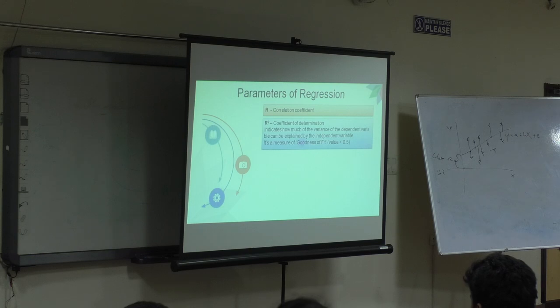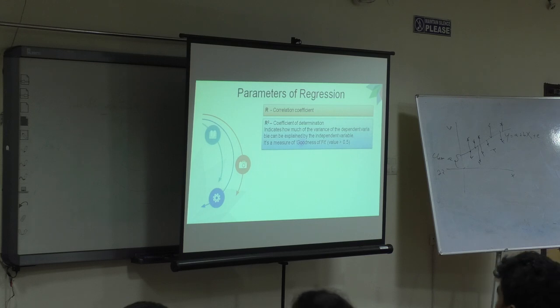Coefficient of determination indicates how much the variance of the dependent variable can be explained by the independent variable. I said both of them are related, but by how much is it related? For one unit of change of x, how much is y changing? That is explained by us.